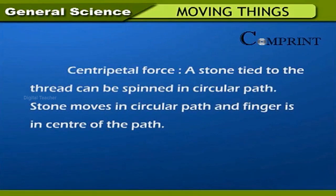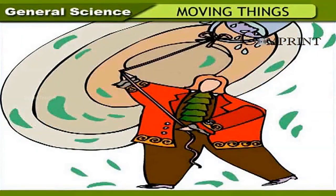Centripetal force: a stone tied to a thread can be spun in a circular path. The stone moves in a circular path while the finger is at the center of the path. In this motion, a force acts towards the center — the force acting towards the center is called centripetal force. Gravitational force acts as centripetal force when planets move around the sun.